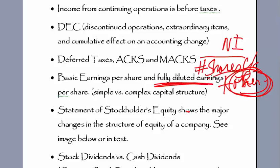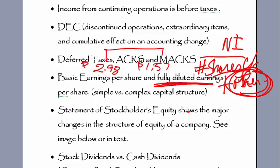You simply display both figures. So earnings per share might be $2.98 on a basic structure, and the fully diluted might be $1.57. Since you don't know whether people are going to exercise those rights, by giving the worst case scenario the investor knows what the worst case is and can make their own decision about whether to buy into the company.